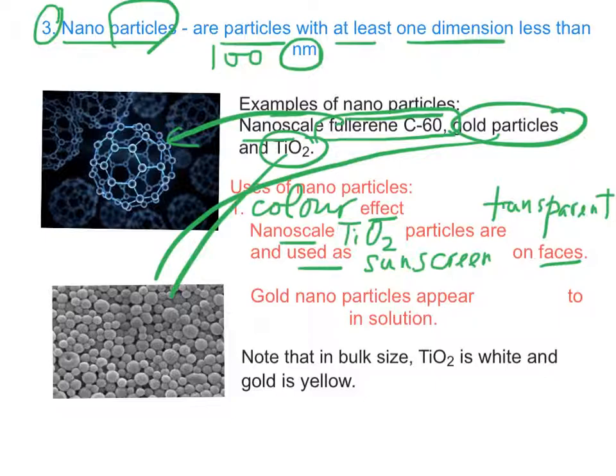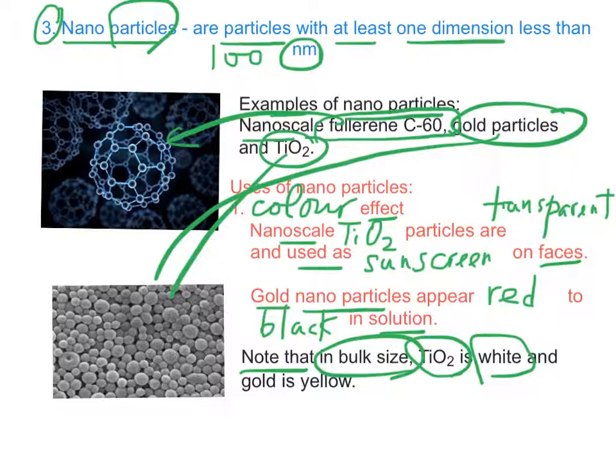Gold nanoparticles appear red to black in color in solution. Note that in bulk size, that means in large scale, titanium oxide is white color instead of transparent, and gold is yellow color instead of red.